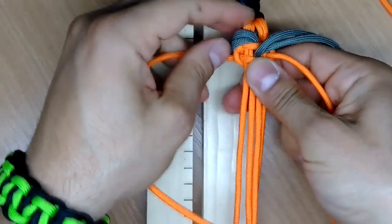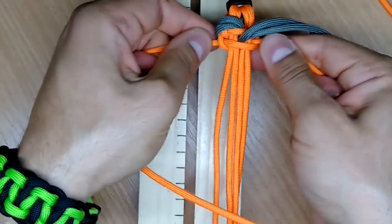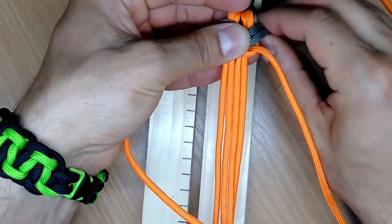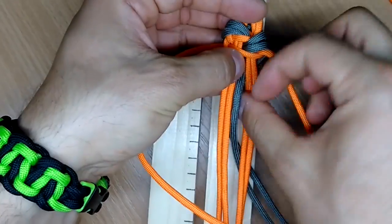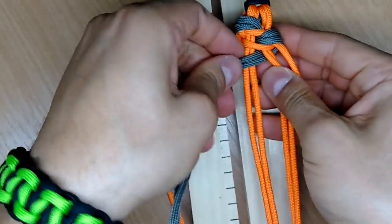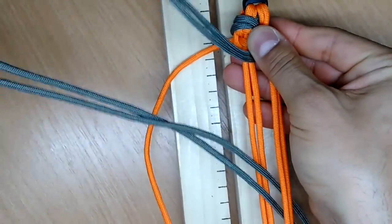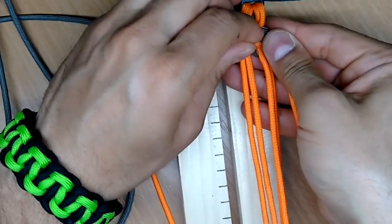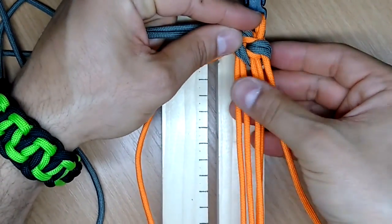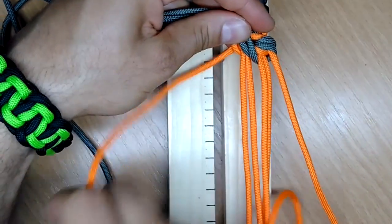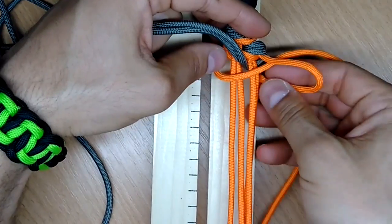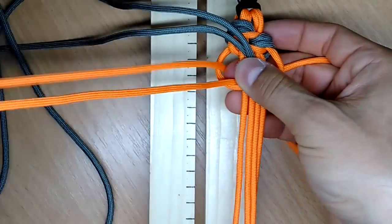And this is gonna go on top and this one gonna go under. And here we're starting with the cobra knot. Now this on the right and through the middle like so. Now pull this left one on top, the right one goes on top of the left and under. So basically we're doing the cobra stitch.